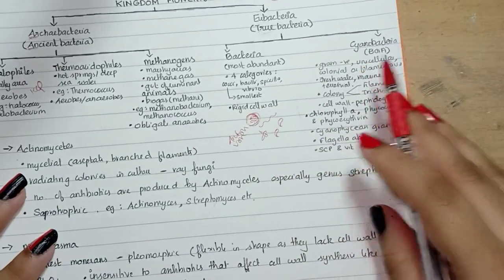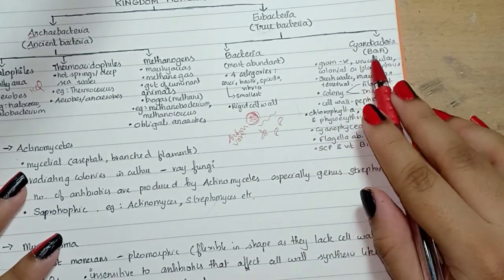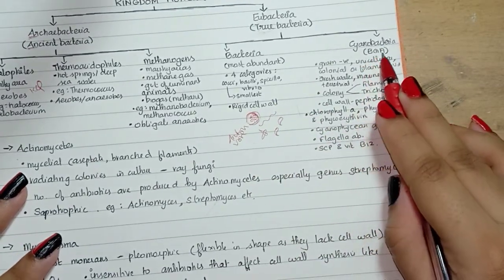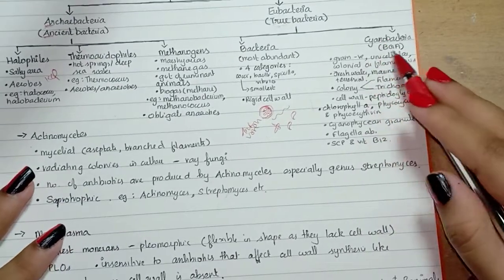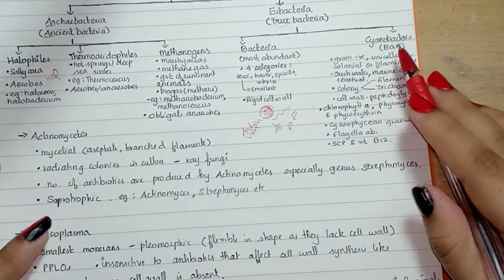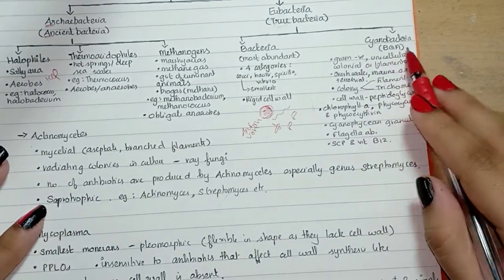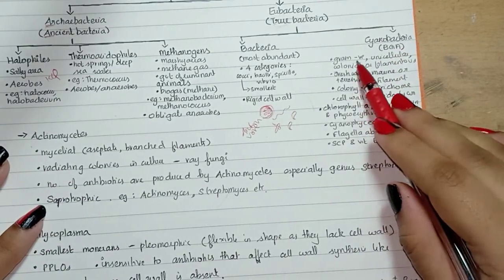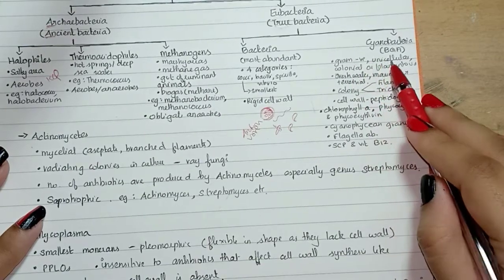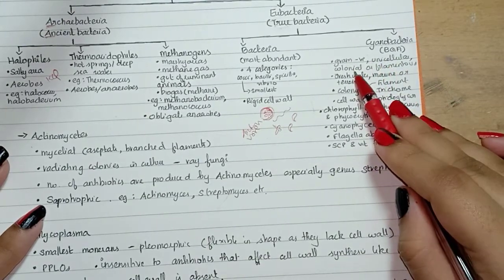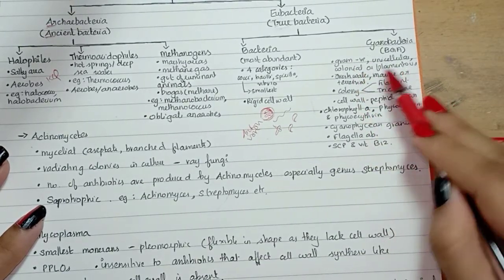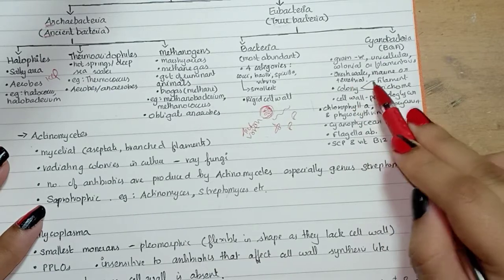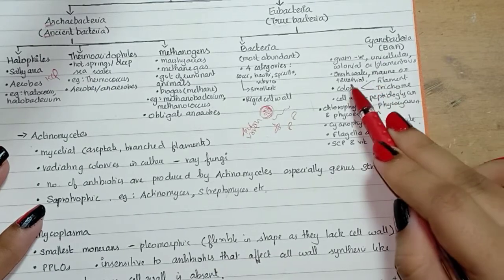Then we will look at cyanobacteria — that is blue-green algae, or BGA. They are gram-negative, unicellular, colonial or filamentous, and they are freshwater, marine, or terrestrial.